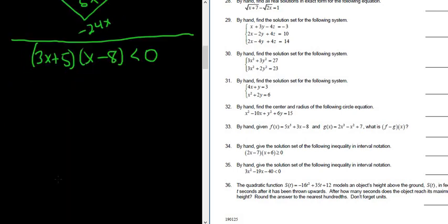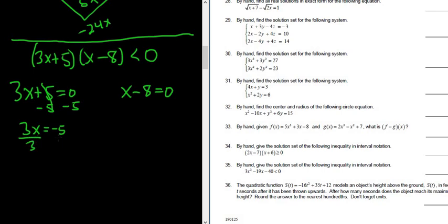So the next step is to set each piece equal to 0. So you have 3x plus 5 equal to 0, and then here you have x minus 8 equal to 0. And then you solve each of these for x. So here you subtract 5, so you get 3x equals negative 5. Then you divide by 3, so we get x equals negative 5 thirds.